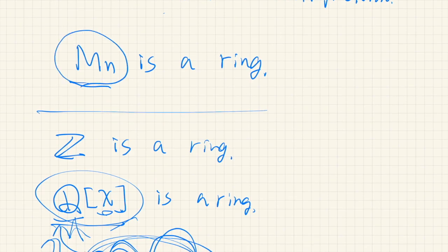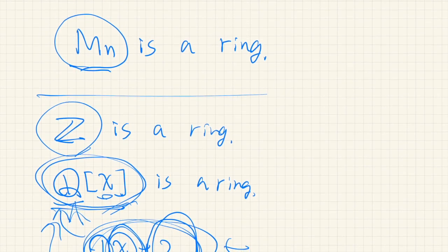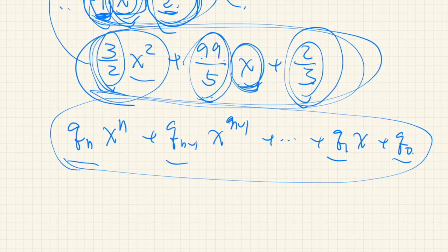So now we know that M_n is a ring, the integers are a ring, and polynomials with rational coefficients are a ring. If we can prove some property based only on the properties of a ring, we don't have to prove it separately for each example — that's a very convenient way to find universal properties among many mathematical objects, similar to what we did for fields. That's all for this video.